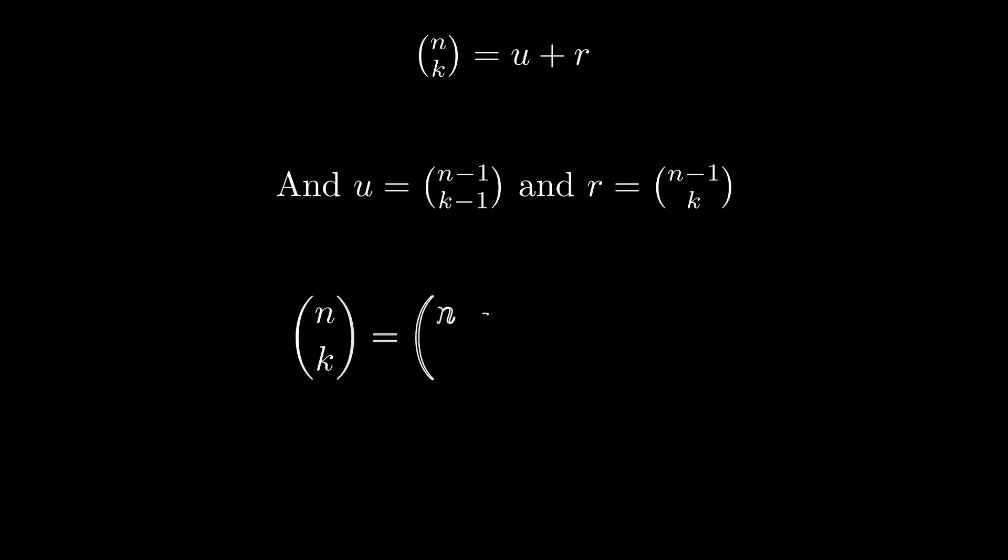Therefore, the number of paths N choose K is also equal to the sum of all paths that start with a right and all paths that start with an up. But we may count the number of paths that start with a right move as N minus 1 choose K, and the number of paths that start with an up move as N minus 1 choose K minus 1.